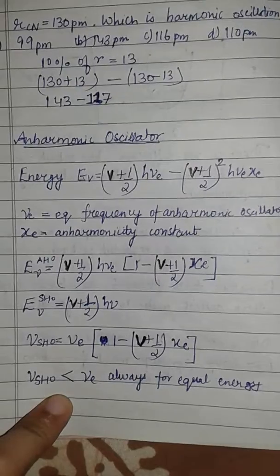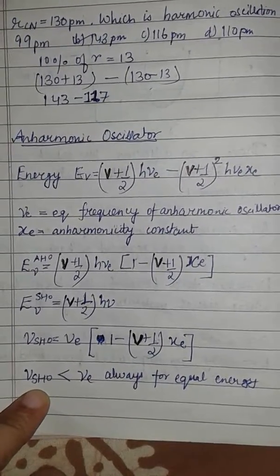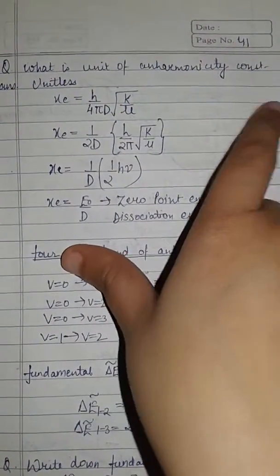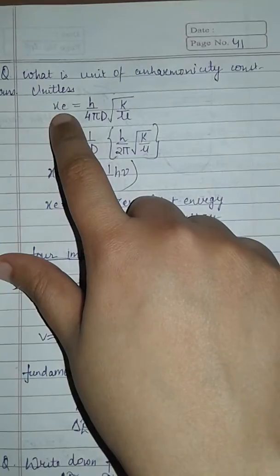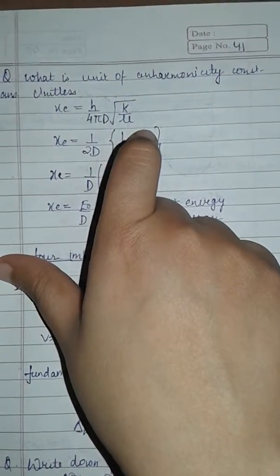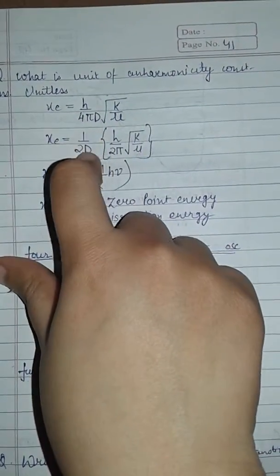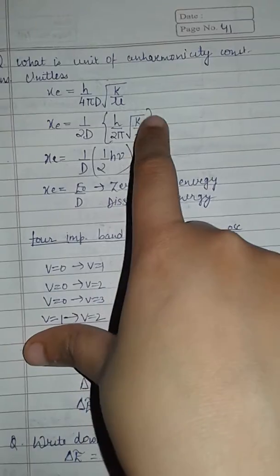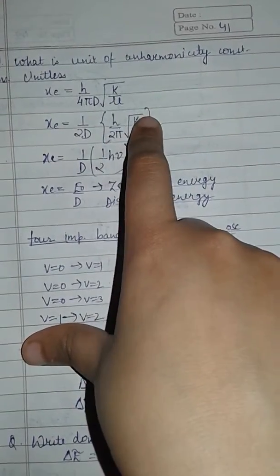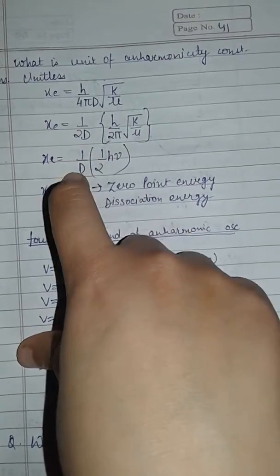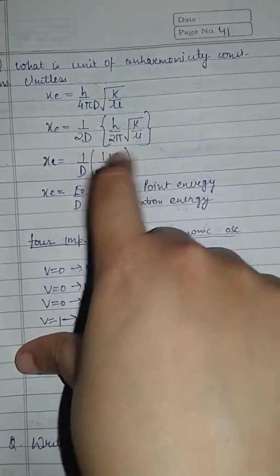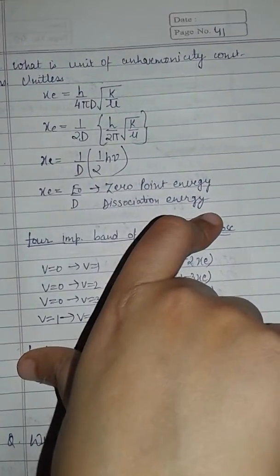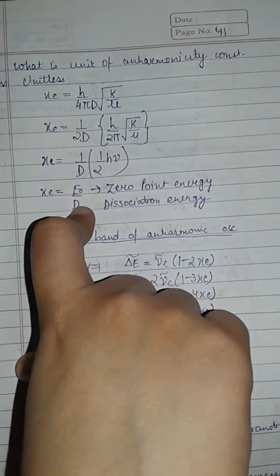The inference is that ν for AHO is greater than ν for SHO for equal energy. The unit of the anharmonicity constant X_e is unitless. X_e equals h/(4π D) times √(k/μ), which can be written as (1/2D) times hν, where (1/2)hν is zero-point energy and D is the dissociation energy. Since numerator and denominator are both energies, X_e is unitless.